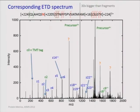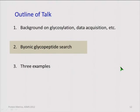Here's the corresponding ETD spectrum, triggered by the oxonium ions we saw in the HCD. This is an even better spectrum — it has quite a few C and Z ions for making the identification. This one has something unusually good: it has C8 and C9 carrying the glycan, which you don't always see.